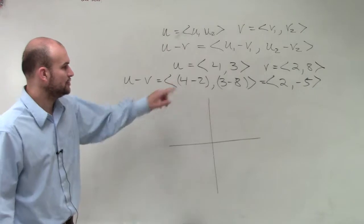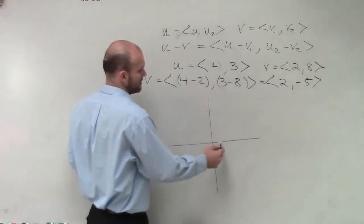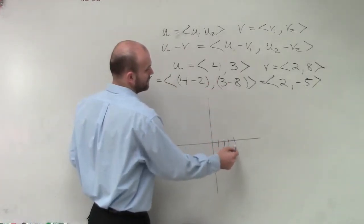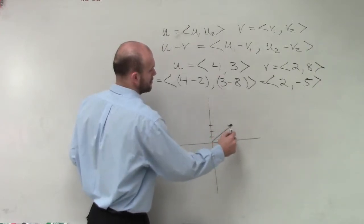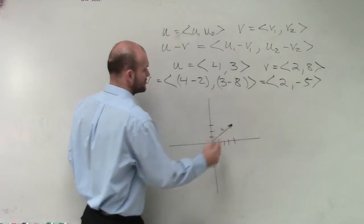u minus v. u is at 4, 3. 1, 2, 3, 4. 1, 2, 3. That is vector u.